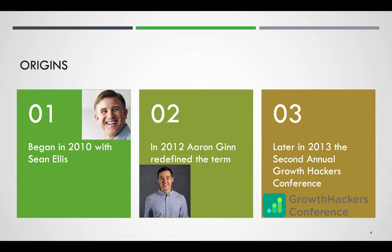In that same year, because of Aaron Ginn, Sean Ellis formed a new kind of group with other associates called growth hackers — a community that offered software as a service which augmented the growth process. Later in 2013, the second annual growth hackers conference in San Francisco produced individuals who had used the technique on social media sites such as Twitter, YouTube, LinkedIn, and more. This resulted in today's large growth hacking community, which has become a mainstream marketing tactic to help companies expand rapidly on the internet.